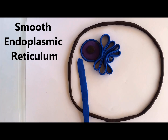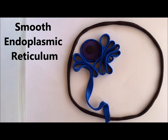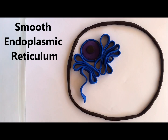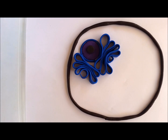Then we have the smooth endoplasmic reticulum, which again is a series of flattened membrane sacs, but this is where lipids or fats are produced and then toxins or toxic substances are broken down.